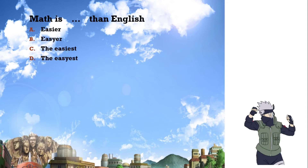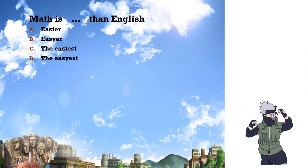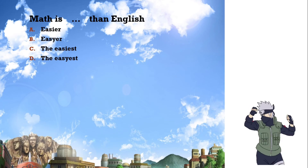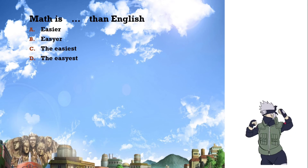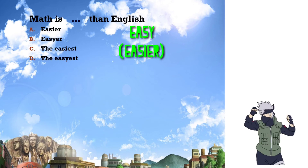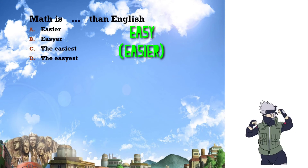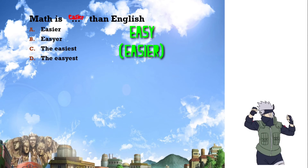Number five: 'Math is ___ than English.' This sentence compares two subjects — math and English. The basic adjective is 'easy,' which also ends in Y, so the Y changes to I. Since we're comparing two things, it is comparative. The answer is: 'Math is easier than English.'